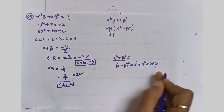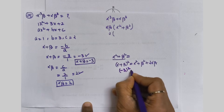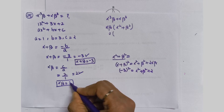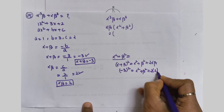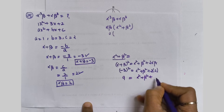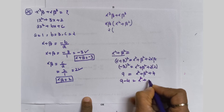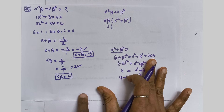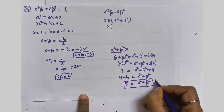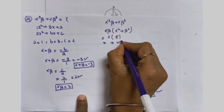Applying the known values: (−3)² = alpha² + beta² + 2×2. So 9 = alpha² + beta² + 4. Therefore alpha² + beta² = 9 − 4 = 5. Now applying this: α³β + αβ³ = alpha·beta × (alpha² + beta²) = 2 × 5 = 10. The final answer is 10.